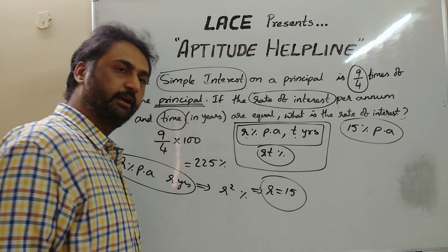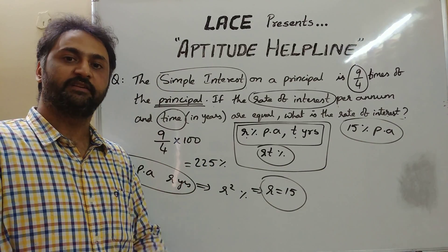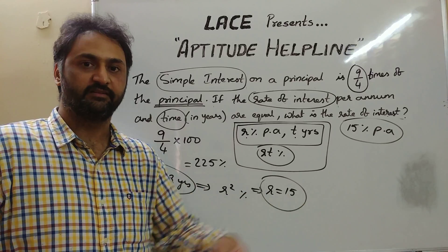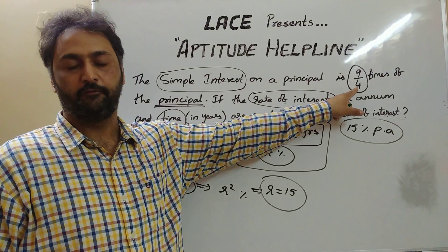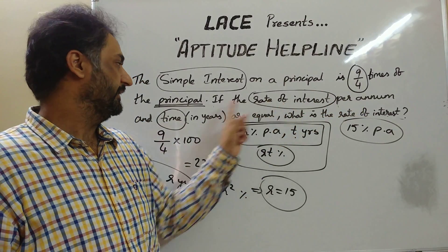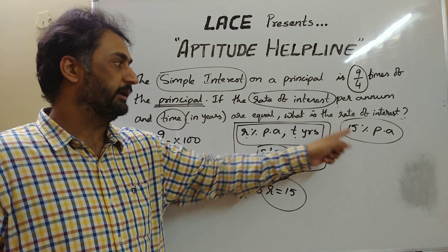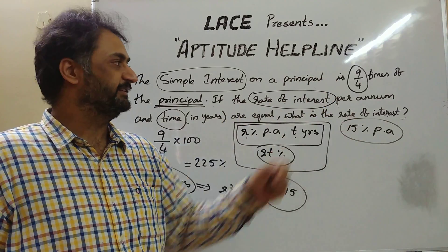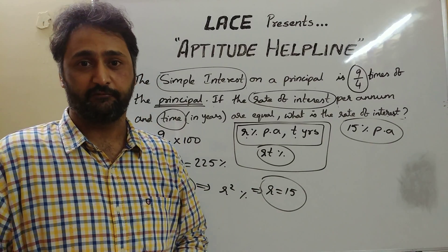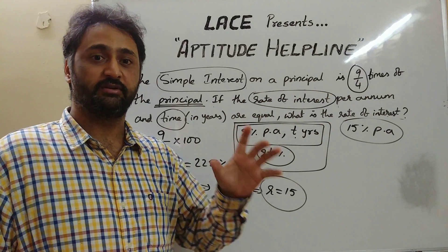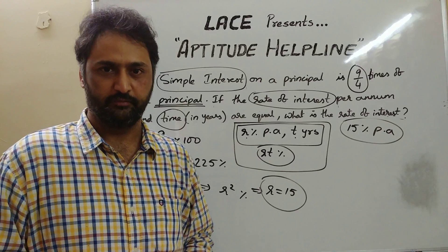That means you took a loan at 15% per annum for 15 years, so the total interest becomes 15 × 15 = 225%. Whenever you see 9/4, form 225 in your mind; whenever R equals T, form R². So R² = 225 gives R = 15. This is how simple interest questions can be answered in under 10 to 40 seconds by properly interpreting the question instead of searching for different formulae or shortcuts.